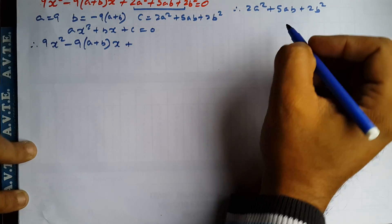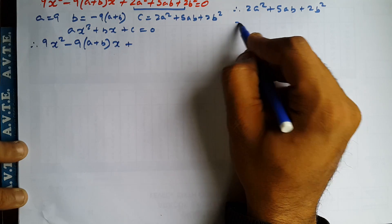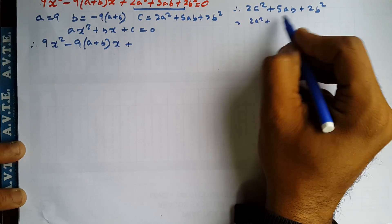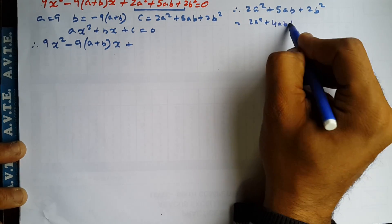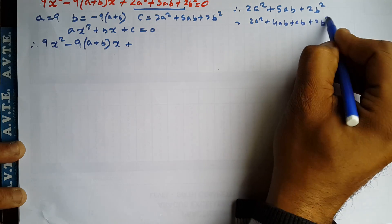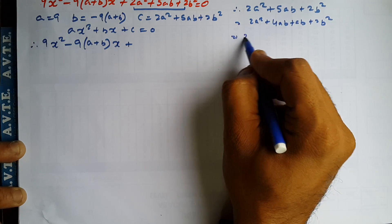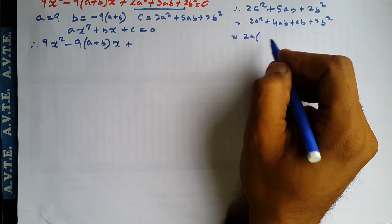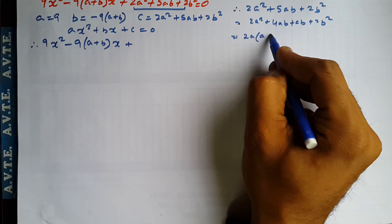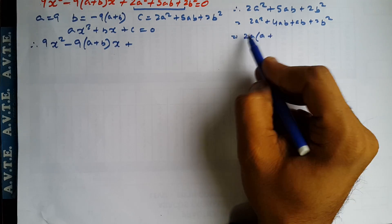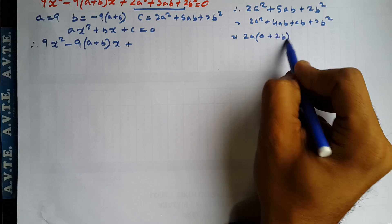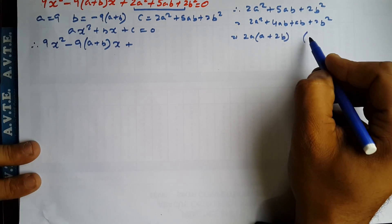So this is 2A square plus 4AB plus AB plus 2B square. 2A common. Common means you are dividing. So this is A. This is 2B. And same thing you can write down here.